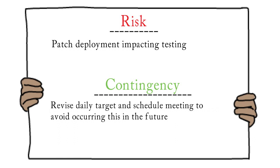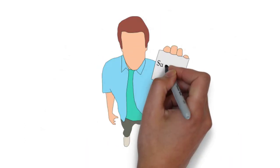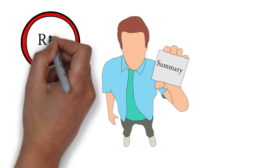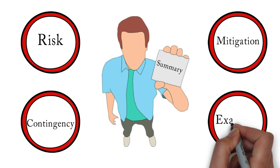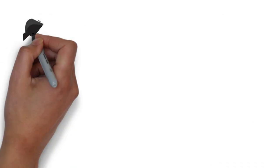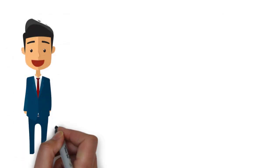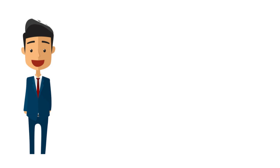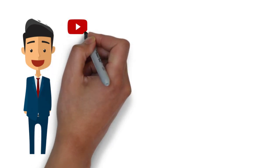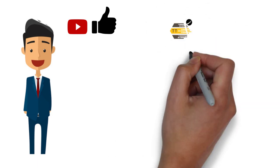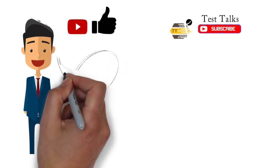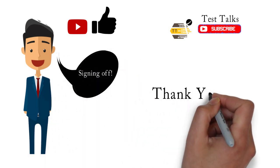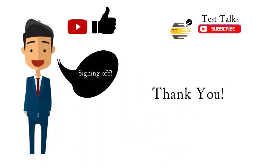We have seen examples of contingency plans for some of the risks. To summarize, we have discussed risk, mitigation, and contingency, and we have seen all these things with examples. I believe this session helps you understand the difference between risk, mitigation, and contingency plan. If this video helps you, please click on the like button and subscribe to my channel Test Talks. I'll be coming with more videos, so please keep an eye on it. This is Sharif signing off. Thank you guys.